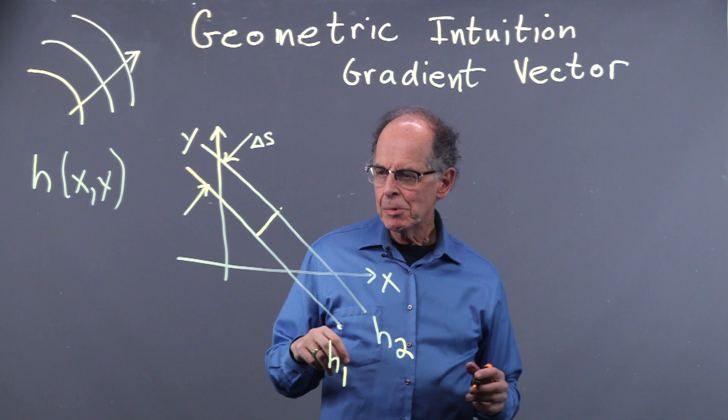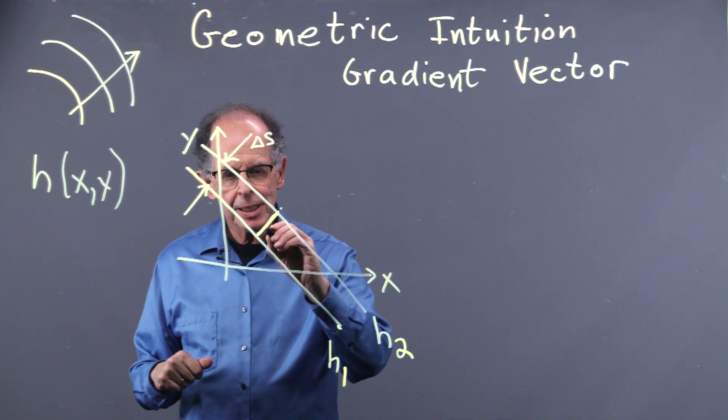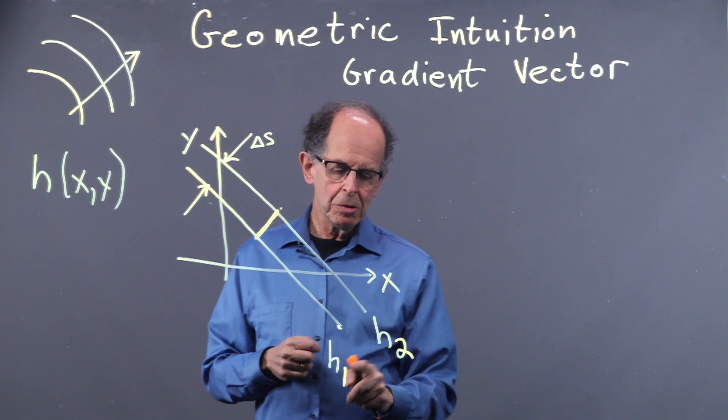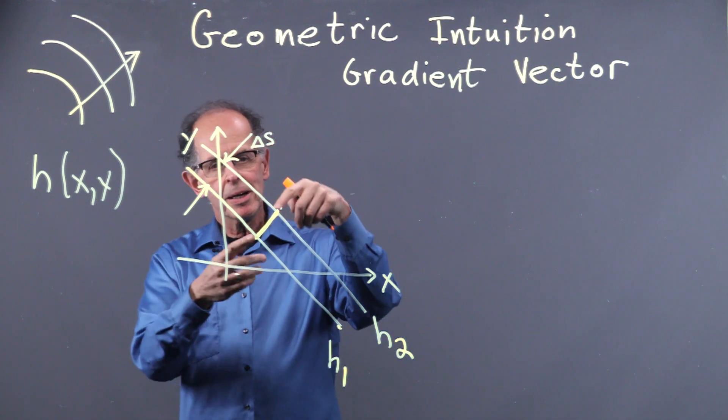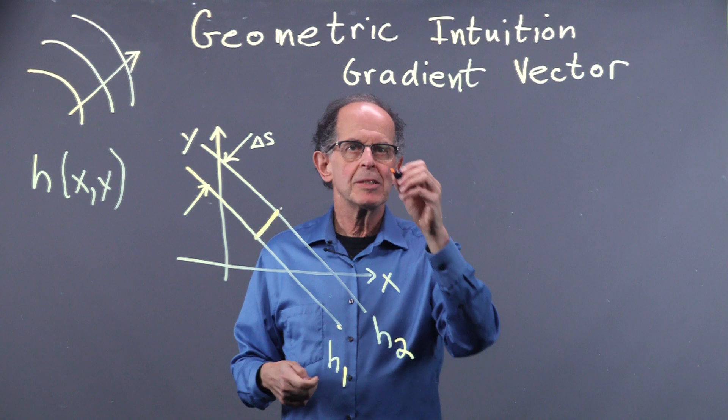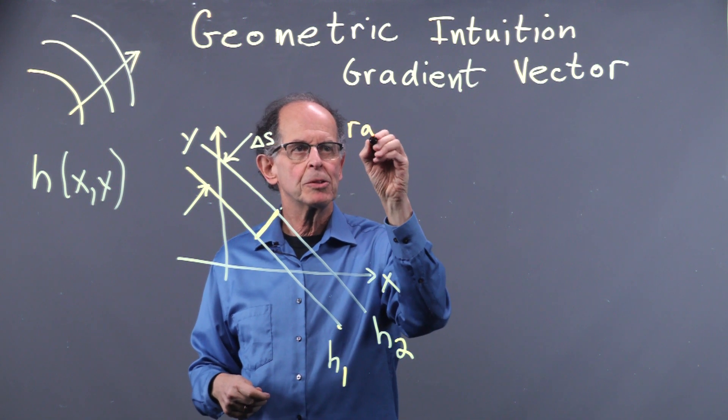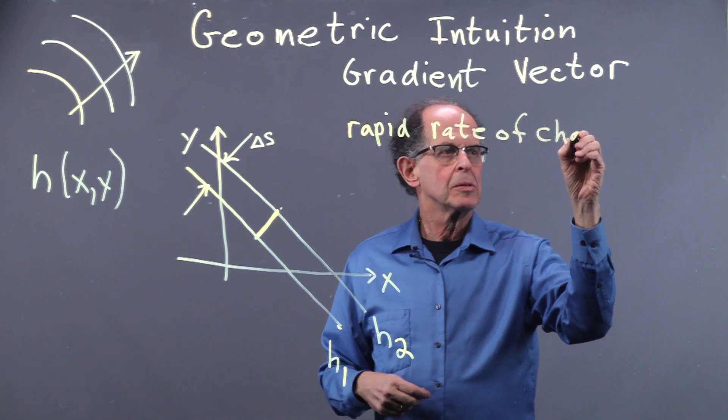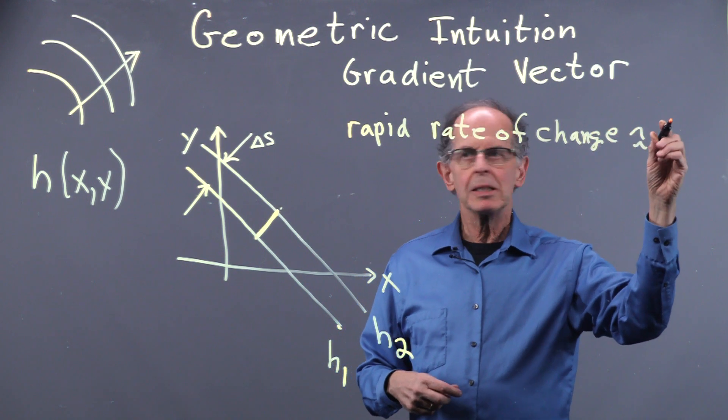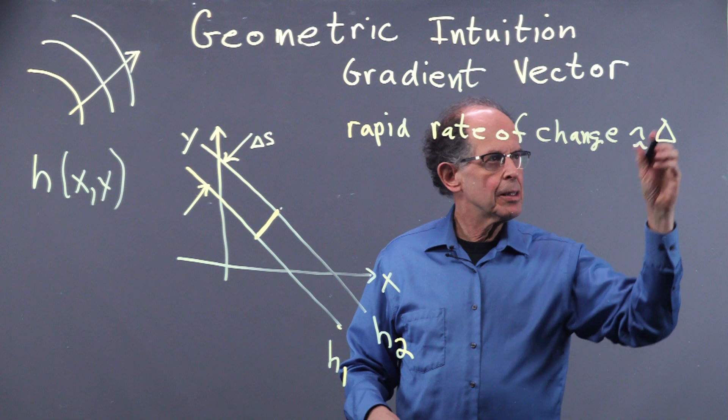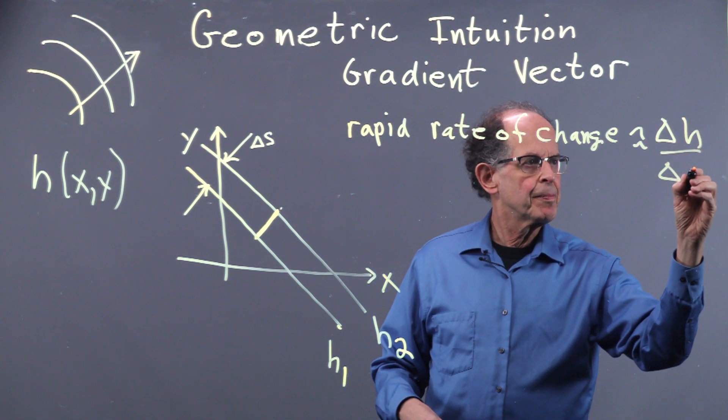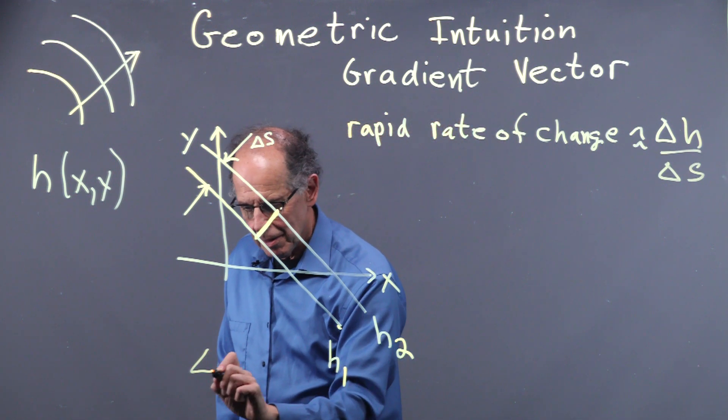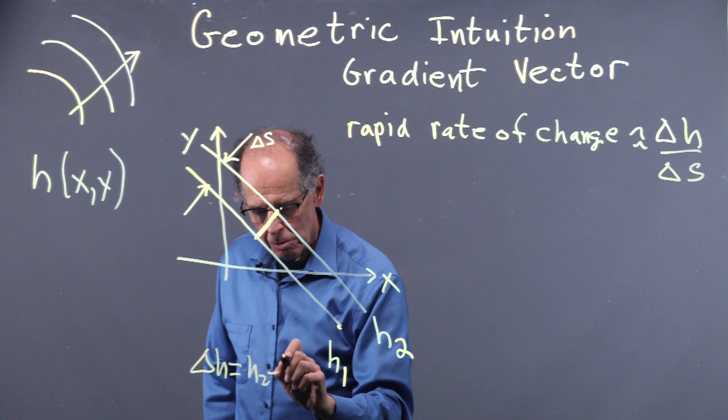So let's look at this a little more carefully. And I can actually calculate that steepest ascent, the slope. It's going to be H2 minus H1 divided by this distance, delta S. So the rapid rate of change is approximately delta H over delta S. And delta H is the difference between these two. So delta H equals H2 minus H1.